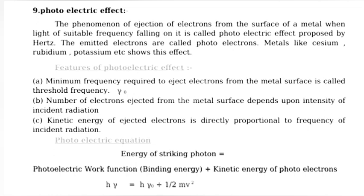Features of photoelectric effect: Minimum frequency required to eject electrons from the metal surface is called threshold frequency. Number of electrons ejected from the metal surface depends upon intensity of incident radiation. Kinetic energy of ejected electrons is directly proportional to frequency of incident radiation.